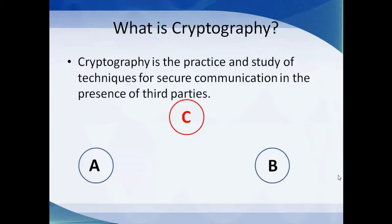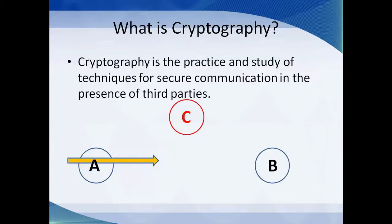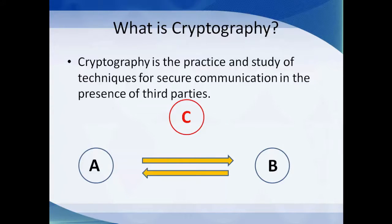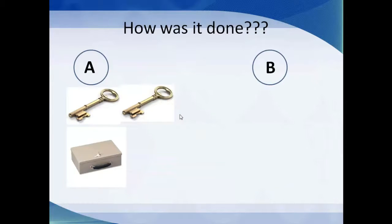Let's see a diagram which will make sense. Consider we have two parties A and B — two persons — and A wants to transmit some data to B, or in the vice-versa direction from B to A. We always have a threat from third parties who may try to steal our data. The message is transmitted from A to B or B to A, and there is a high risk of C intervening and trying to find out the data.